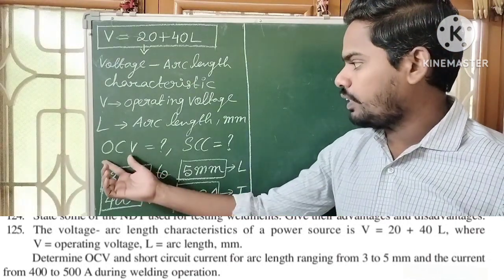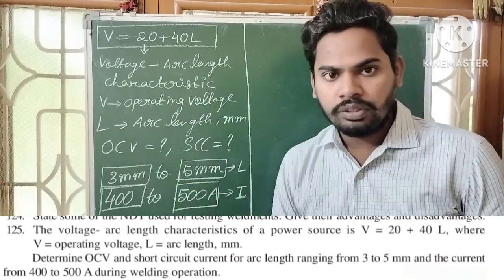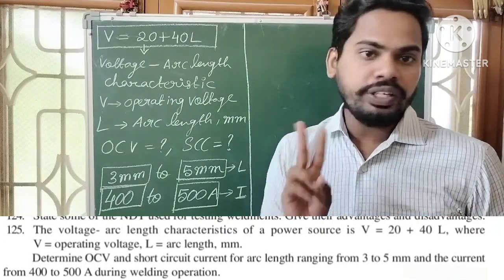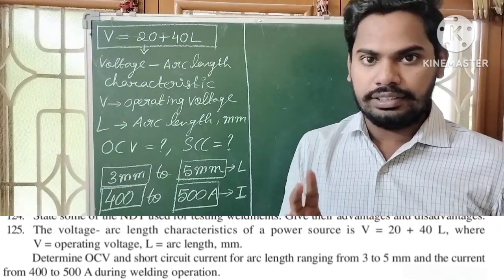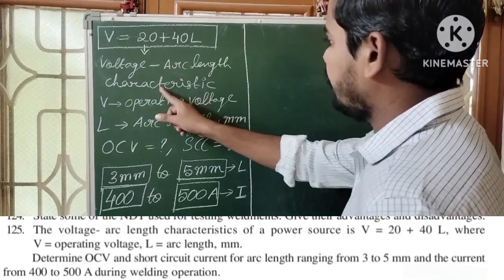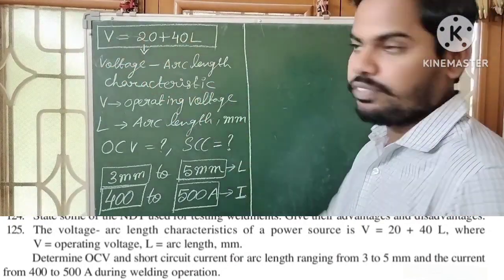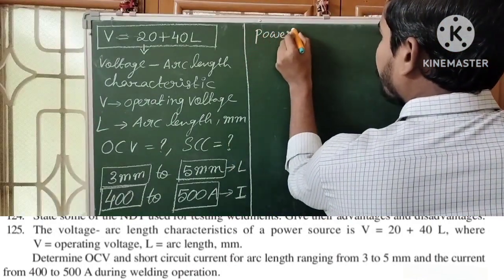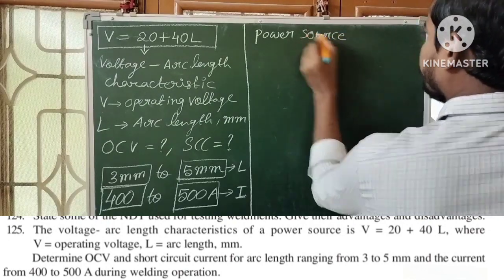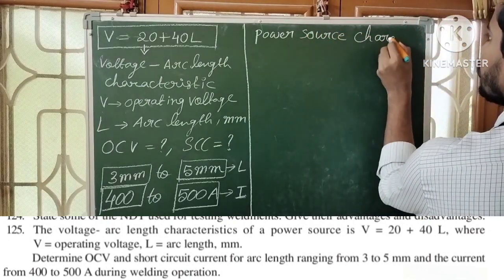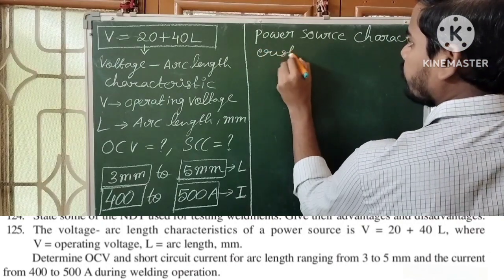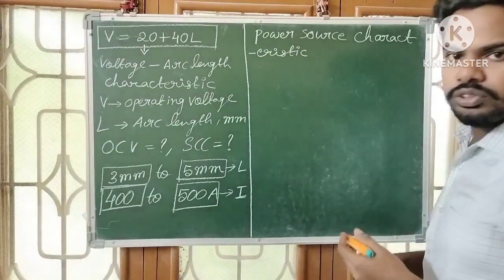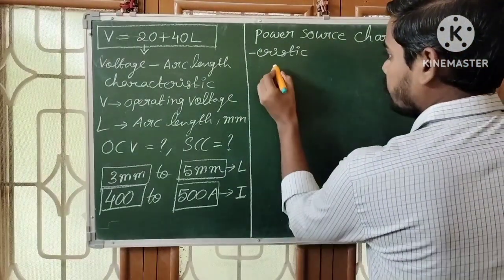To find open circuit voltage and short circuit current, we have to apply two equations — two characteristics. First is the voltage arc length characteristic: V = 20 + 40L. The second is the power source characteristic, which is very important.